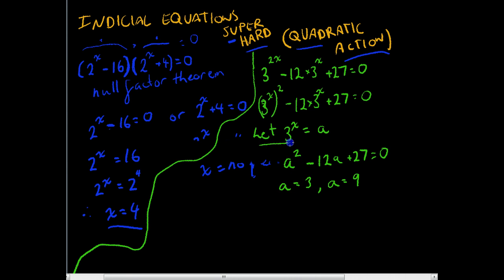If that's the case, remember up here we let 3 to the power of x equal a, so that means either 3 to the power of x equals 3 or 3 to the power of x equals 9. That means therefore x equals 1 in this case because 3 to the power of 1 equals 3, and in this case, if we equate the bases, 3 to the power of x equals 3 to the power of 2, therefore x equals 2.